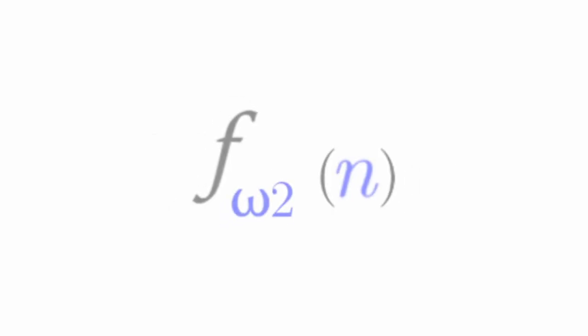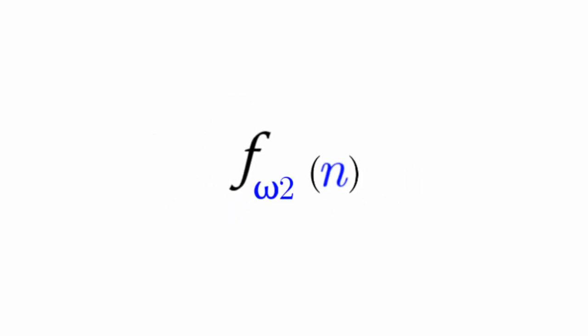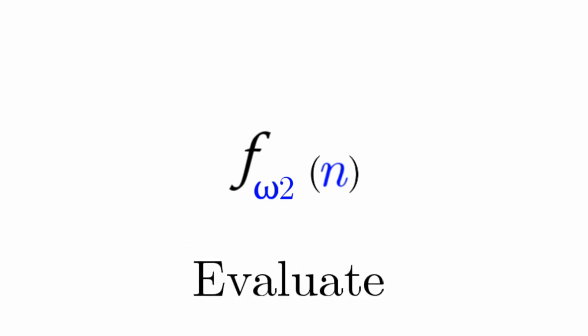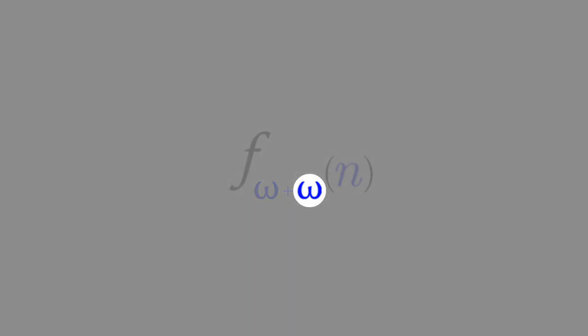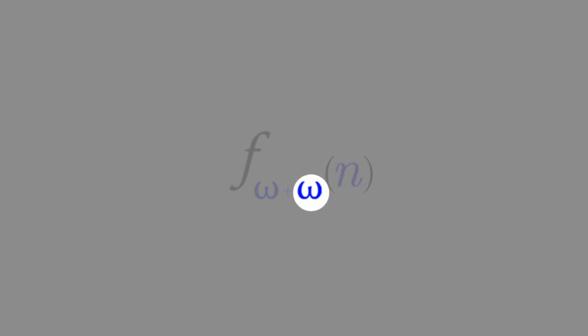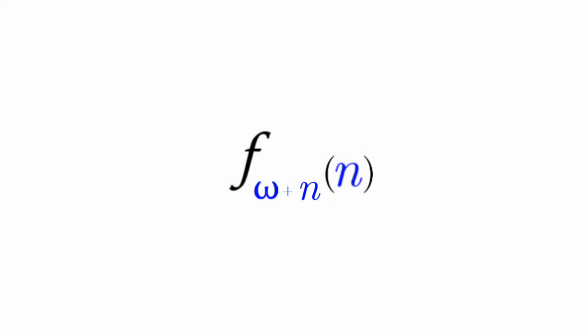Just how much faster would F(omega×2) be? Let me show you how to break down omega times 2. Omega times 2 breaks down into omega plus omega. Now pay attention to this omega — this is the closest omega to N. You diagonalize omega by turning it into an N, so we have F(omega + N) of N.